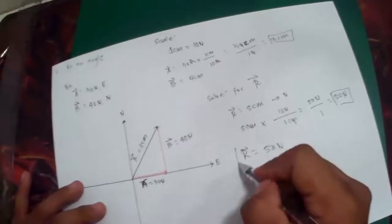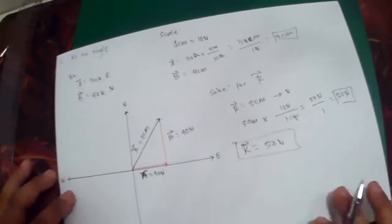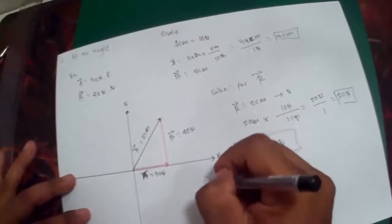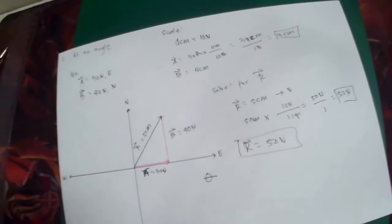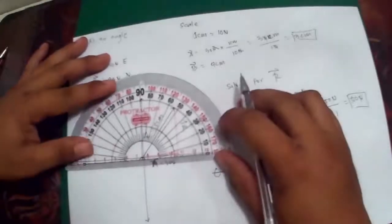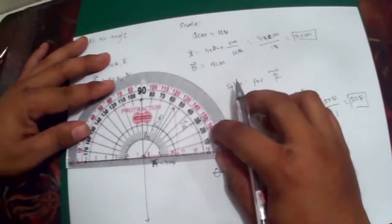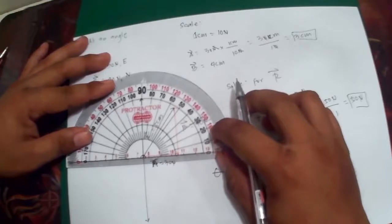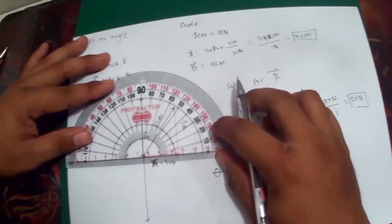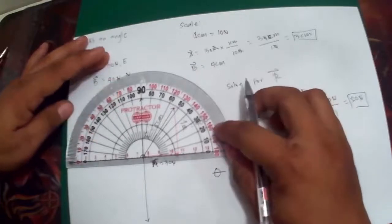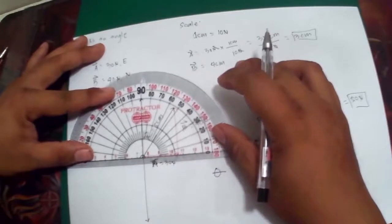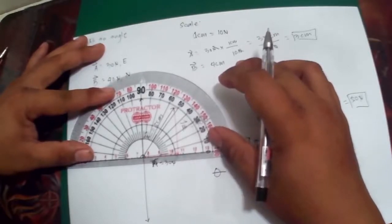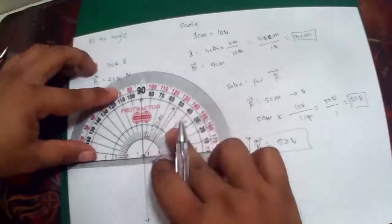How about the direction of the vector or the angle of the vector? So in finding the angle of the vector, we just use our protractor. So from this point, and manually I will measure this one. Again, depending on the accuracy and precision of your measurement. But in this case, I will just base my answer on what I'm seeing here.